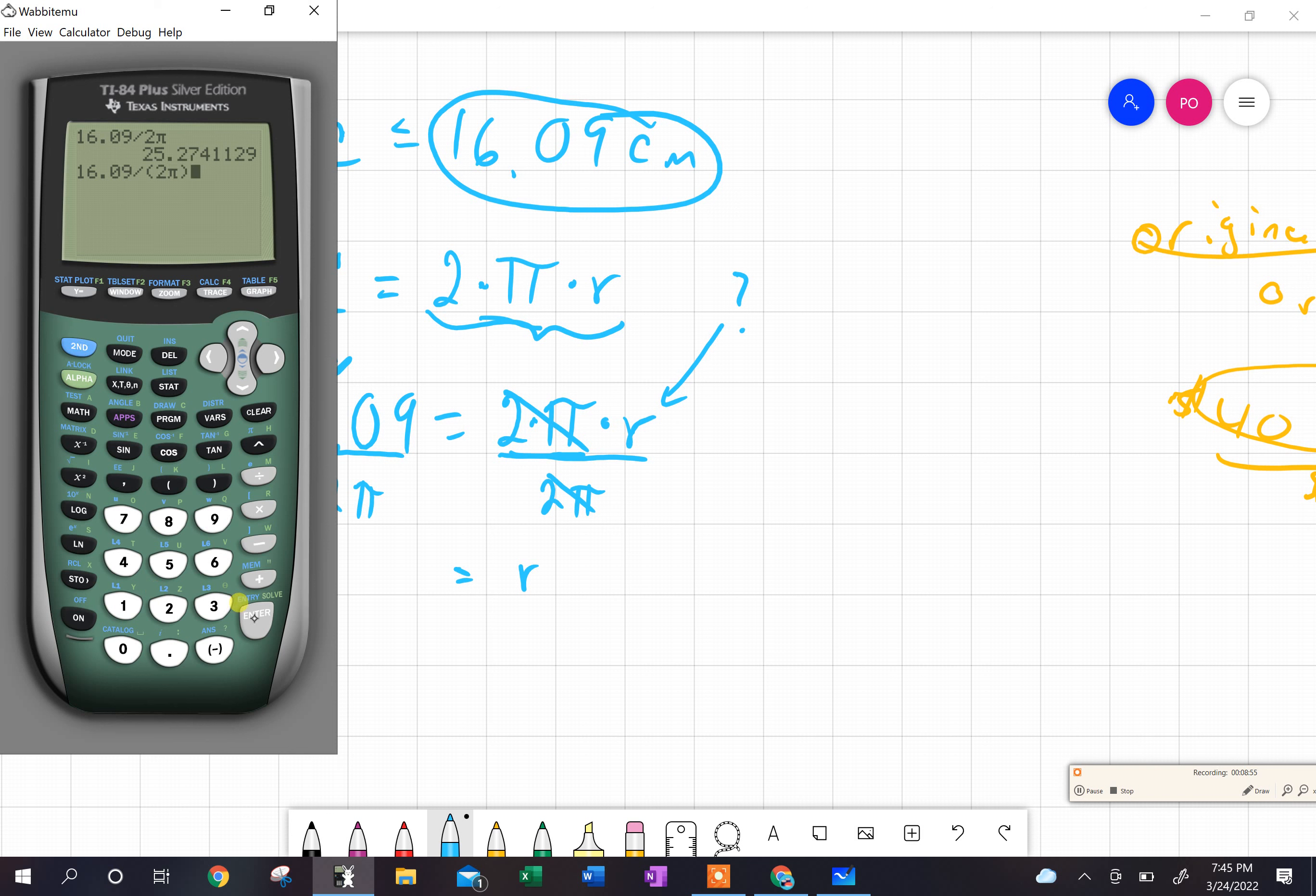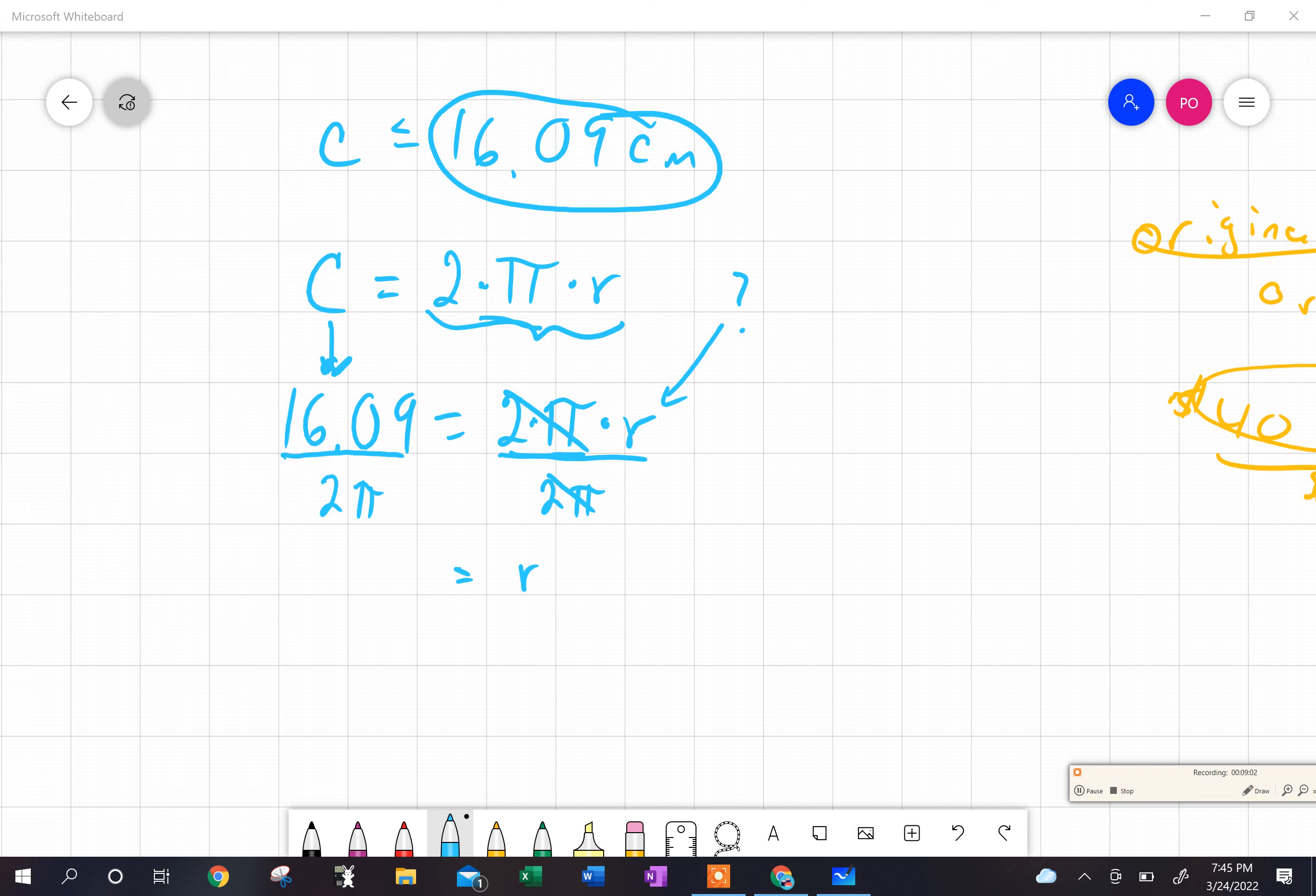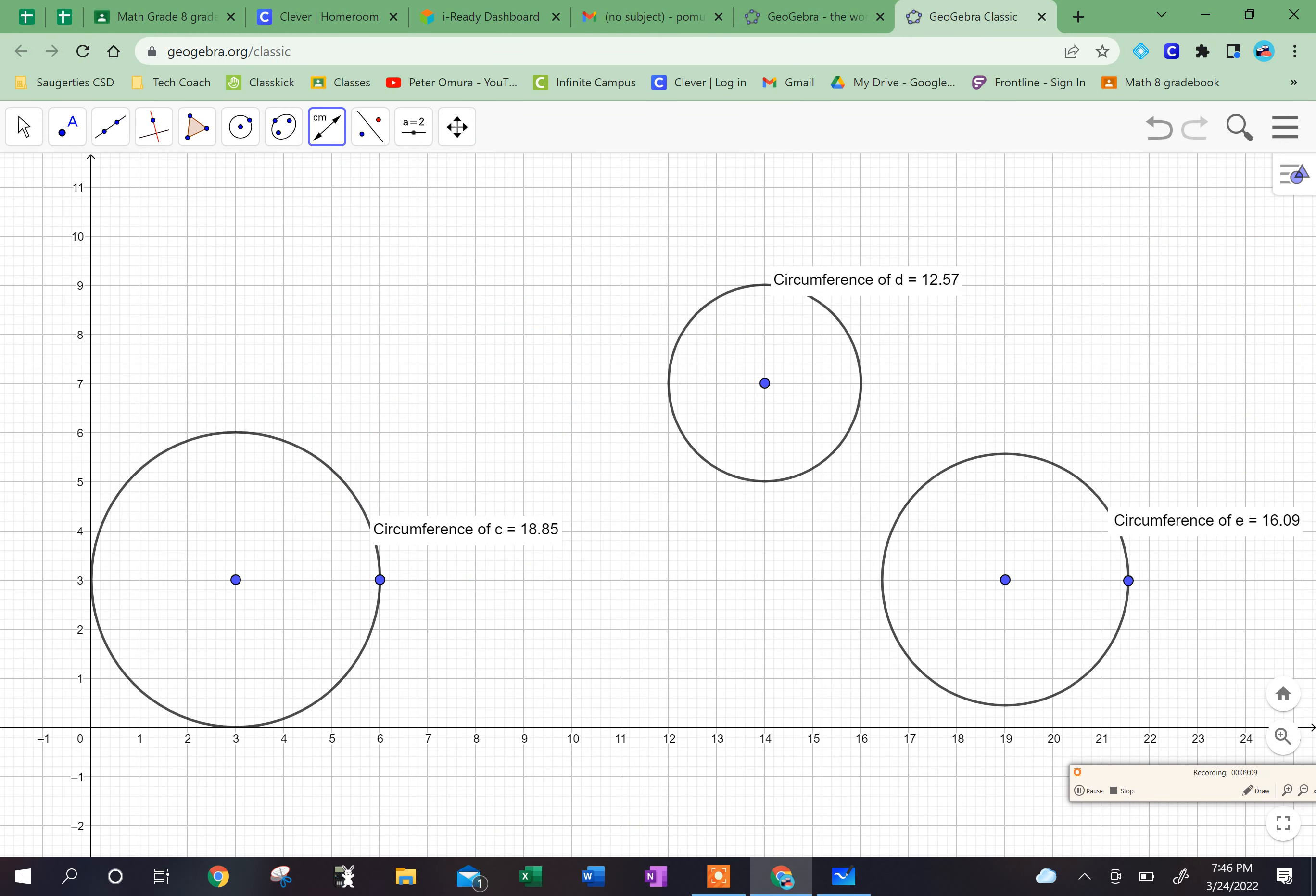When you divide, you have to use the parentheses. Otherwise it's going to divide by 2 and then multiply by π. It looks like my radius was 2.56, approximately 2.56 centimeters. And if I go back to here, let's see what is the radius.